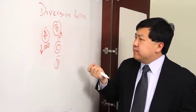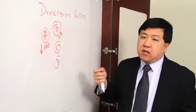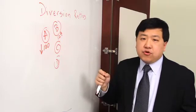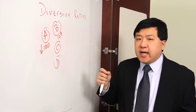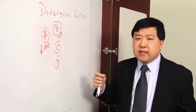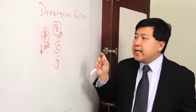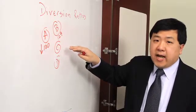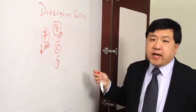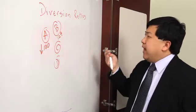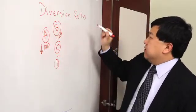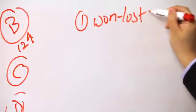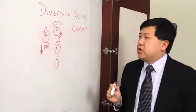Once you have your diversion ratio estimate, you can take that along with an estimate of profit margins and assumptions about efficiencies, and that gets you to your upward pricing pressure type tests. And that's covered in a separate lecture. In this lecture, I'm going to focus on how do we actually go about calculating diversion ratios in practice, and what are some of the things to watch out for? There are really three main ways to go about it, and I'm going to start with won-lost data or other business records that you might have from the merging parties.